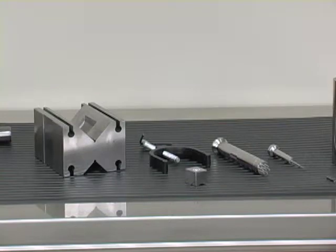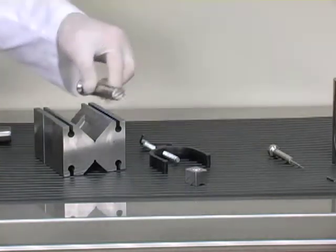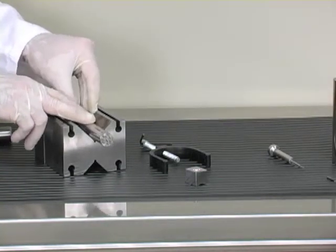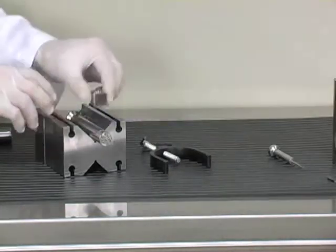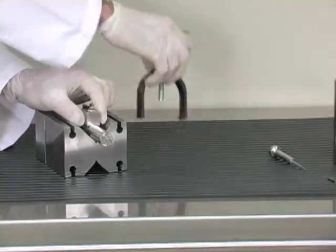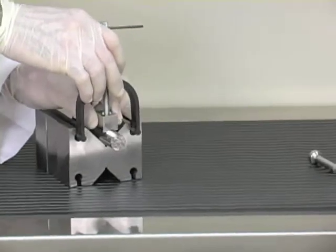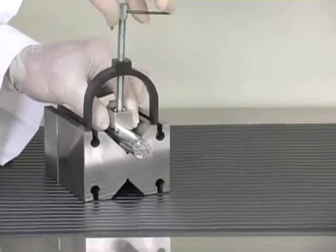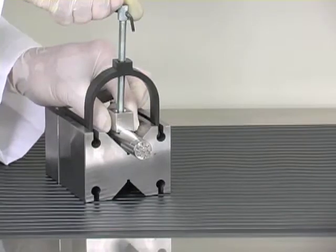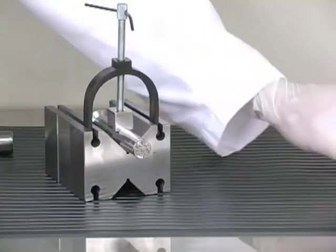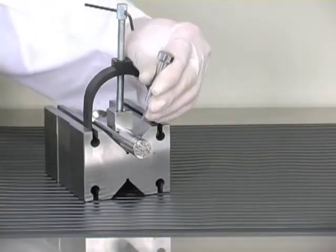First thing we're going to do is secure the punch in the v-block with the holding block and the clamp. We'll use the pen driver to remove the pen.